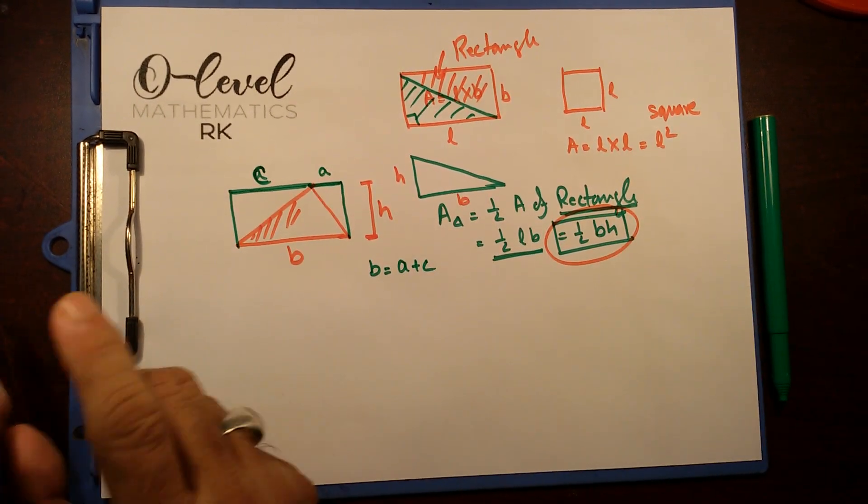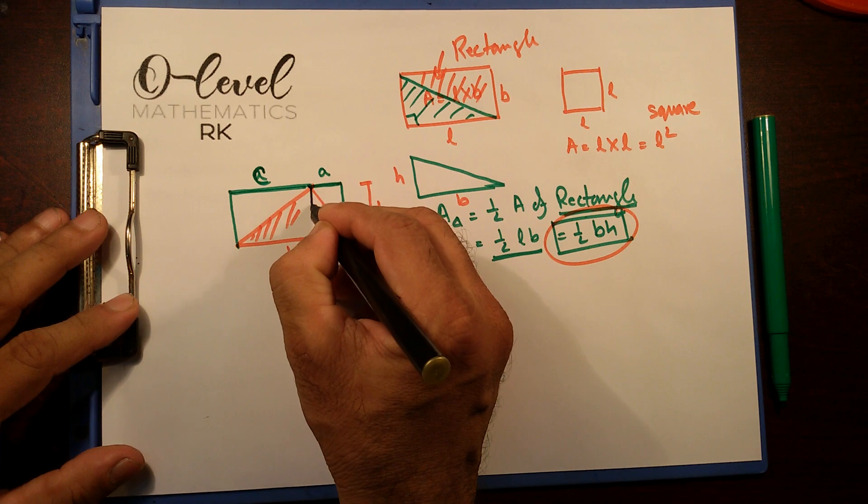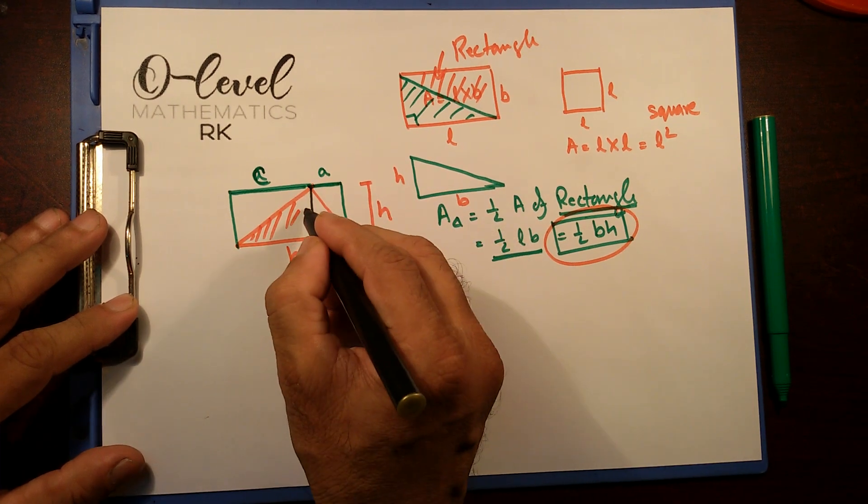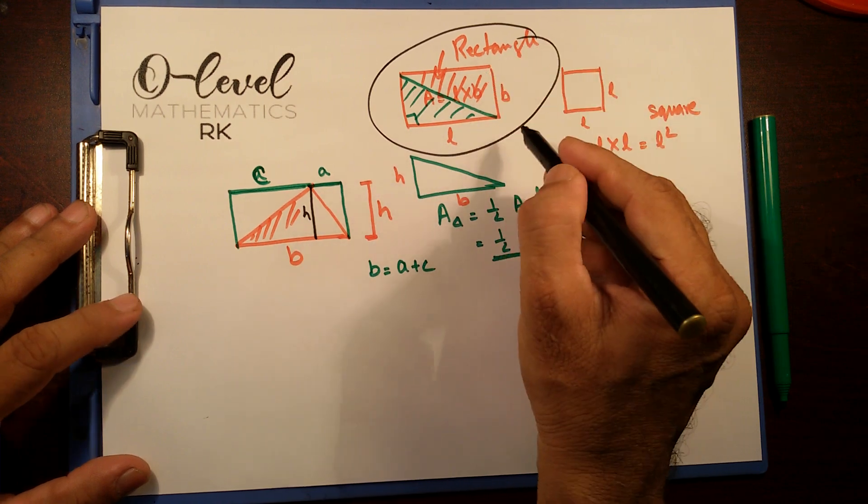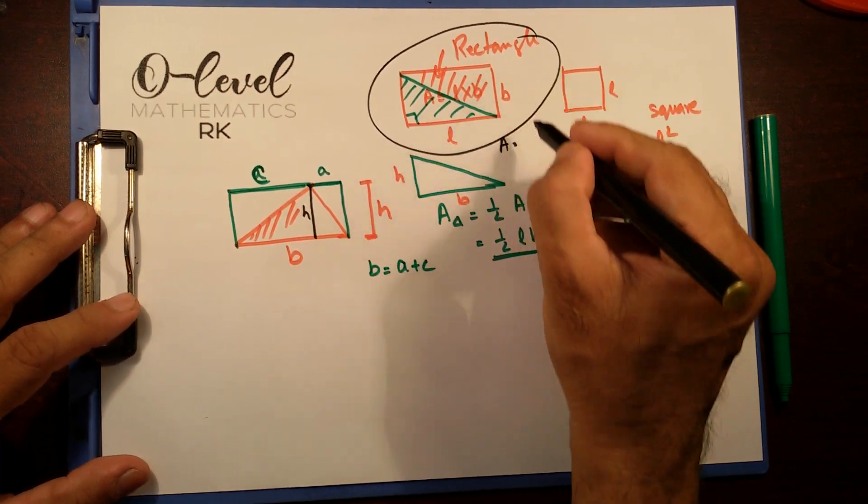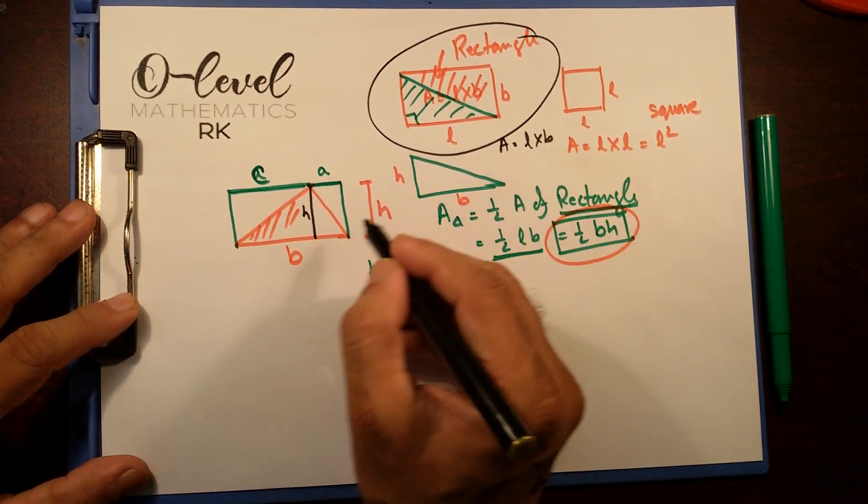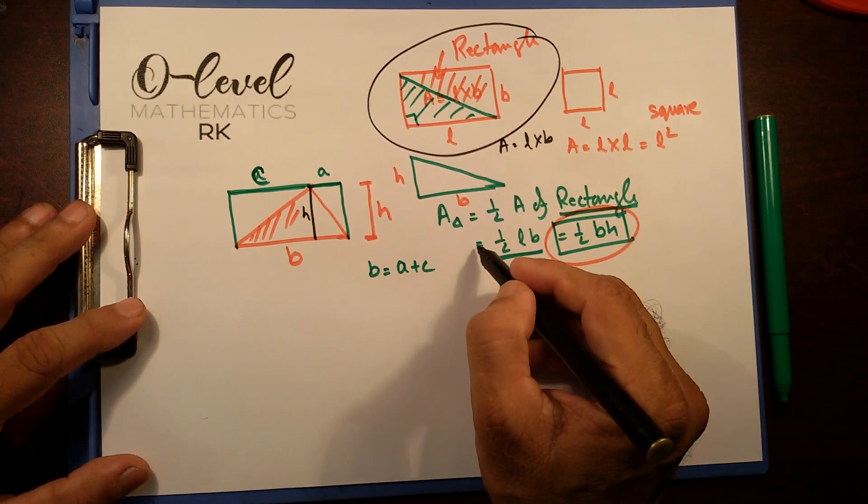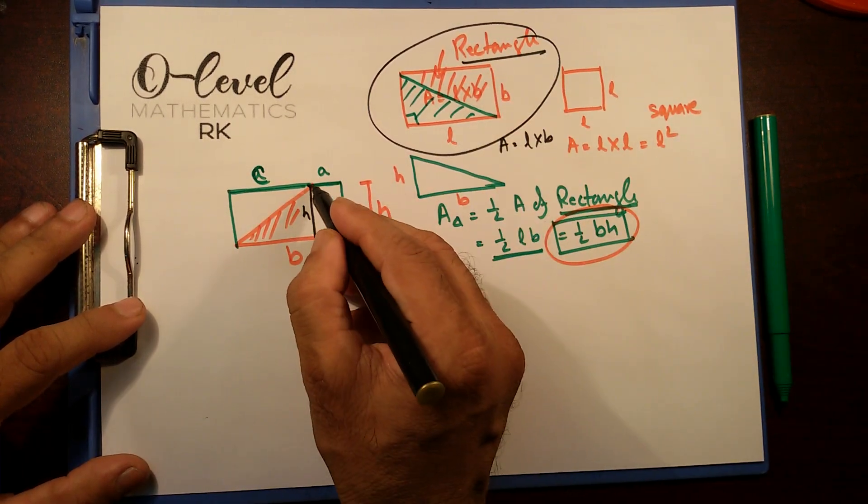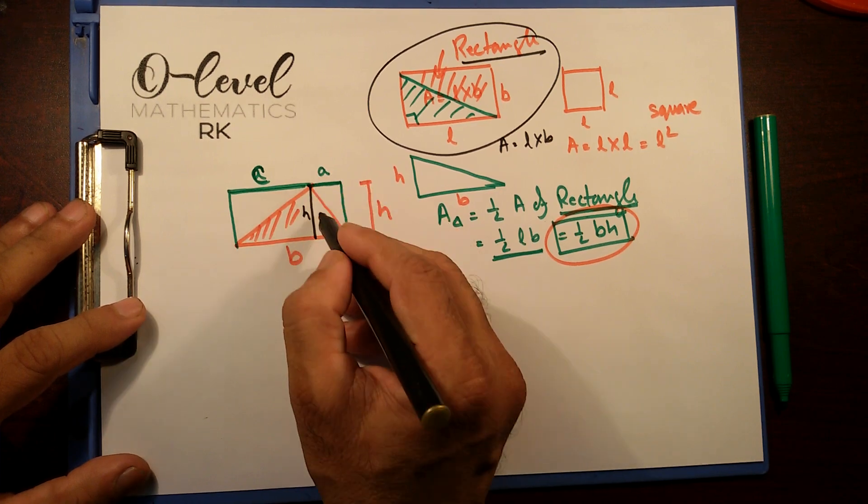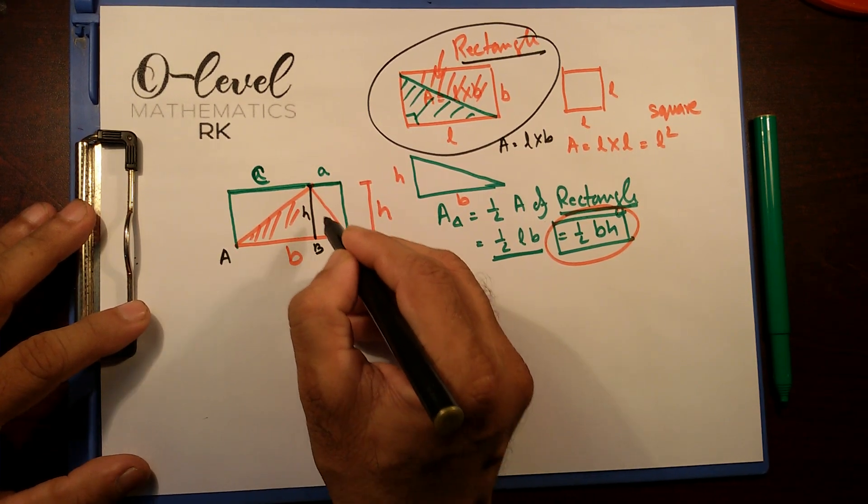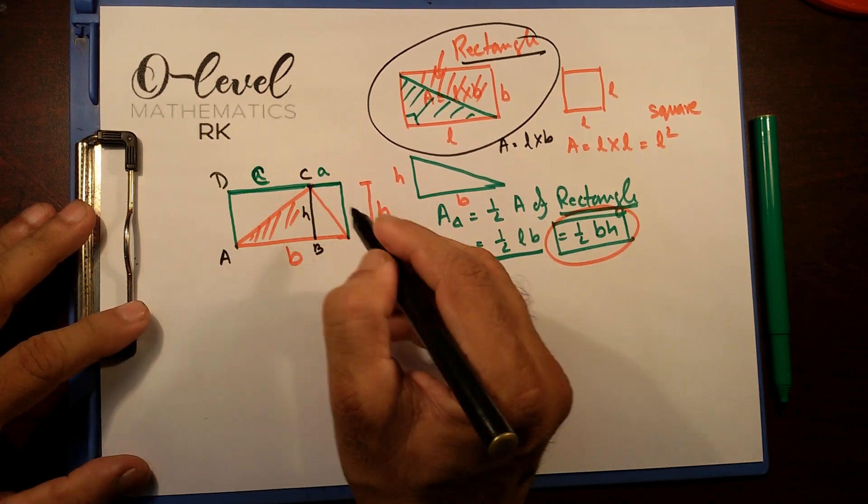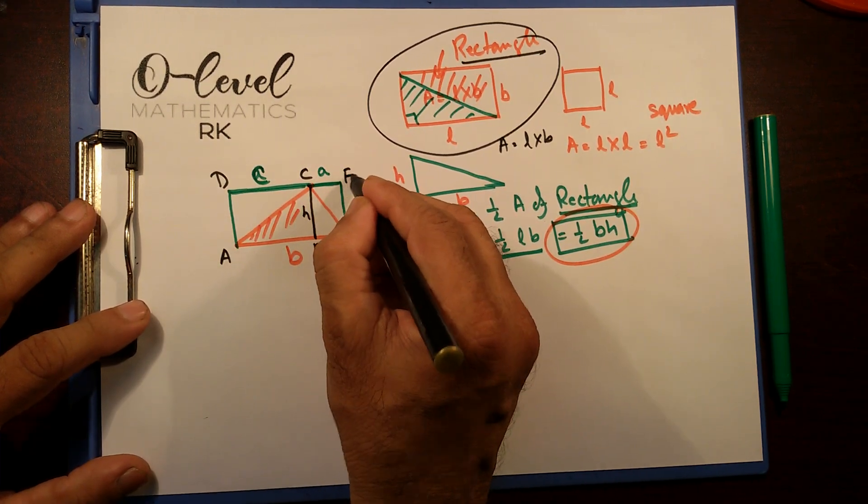Now, what I'm going to do, I'm going to draw a perpendicular line over here. And that's equals to H. Same formula like this. Rectangle, area of rectangle equal to length into breadth. So, area of triangle, half of area of rectangle. So, I'm going to split this one in two different rectangles. Let's call that A, B, C, D and this is E, F.